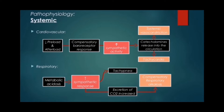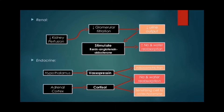In the respiratory system, metabolic acidosis increases sympathetic activity, leading to tachypnea and excretion of carbon dioxide, which compensates through respiratory alkalosis. In the renal system, decreased kidney perfusion leads to decreased glomerular filtration, resulting in decreased urine output, which activates the renin-angiotensin-aldosterone system.